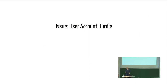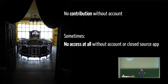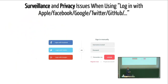The next issue is the user account hurdle. If you require an account to read or contribute, people without accounts cannot participate — sometimes there is no access at all without a closed-source app. Many platforms try to solve this with 'Login with Facebook/Twitter/Google/Apple,' but that introduces a privacy problem: those companies then know which sites you're accessing and when.